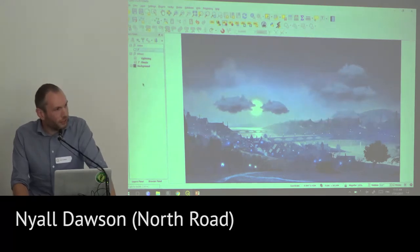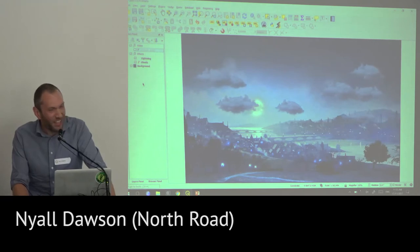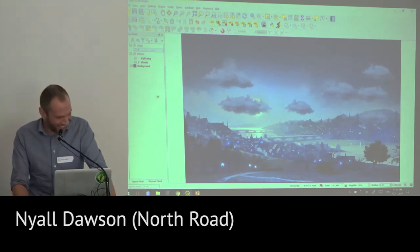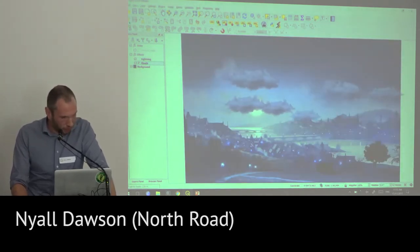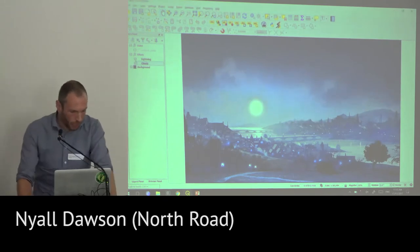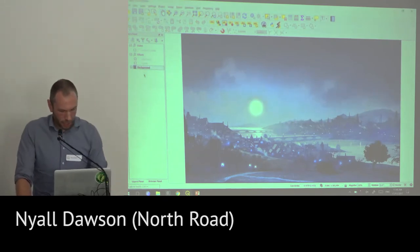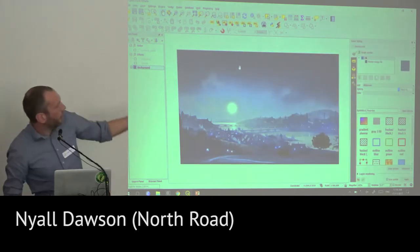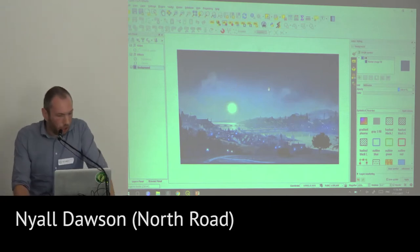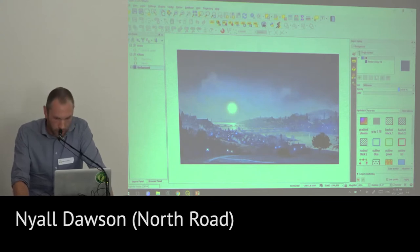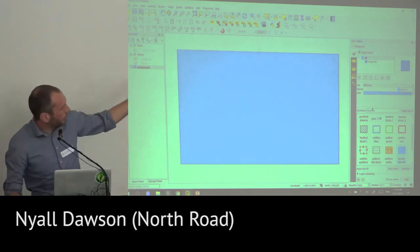Did anyone think you could do that in QGIS just using symbols? Do you want to see how it's done? Do you want to see the secrets behind it? Let me undo these changes and rip this project apart so you can see how this was done. So to start with, the very bottom layer I've got here is just a simple polygon. If I change it to one of the standard styles, all it is is a big box.